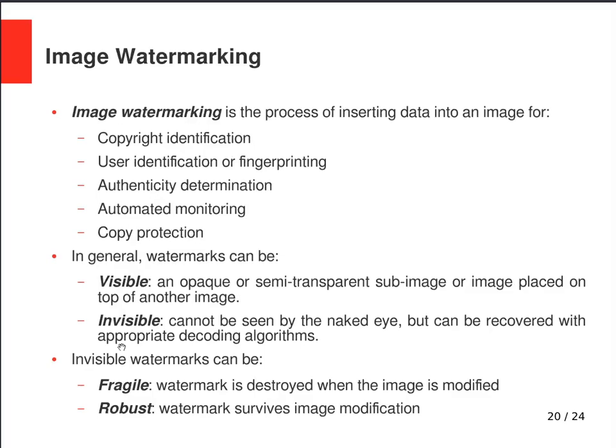Image watermarking is the process of inserting data into an image. It is commonly used for copyright identification, user identification, authenticity determination, automated monitoring, and copy protection. Watermarks can be visible — an opaque or semi-transparent sub-image placed on top of another image — or invisible, where the watermark cannot be seen by the naked eye but can be extracted with an appropriate decoding algorithm.